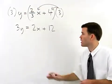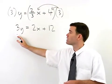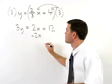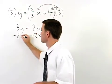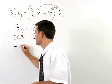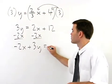In our next step we move the x term to the left side of the equation by subtracting 2x from both sides. That gives us negative 2x plus 3y equals 12.